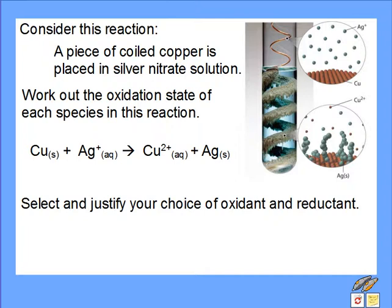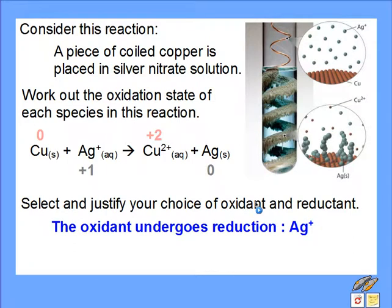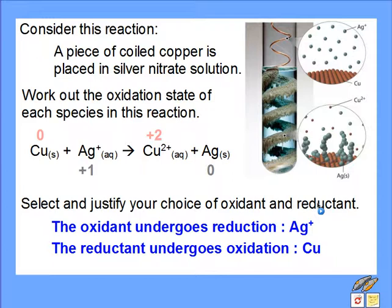Another example: we place a piece of coiled copper in a silver nitrate solution. The oxidation state of copper starts at zero as an element, going to an oxidation state of plus 2. The solution goes from colourless Ag+ to the blue Cu2+. The Ag+ is forming silver metal — a shiny grey deposit on the copper — so there's a decrease in oxidation number, meaning reduction. The oxidant undergoes reduction, and the species being reduced here is Ag+ ions. The reductant undergoes oxidation, and in this example copper is undergoing oxidation, with an increase in oxidation number from zero to plus 2.